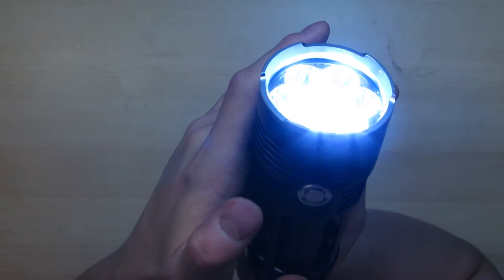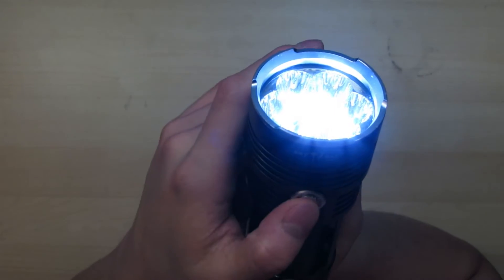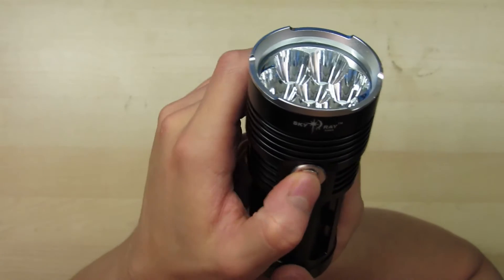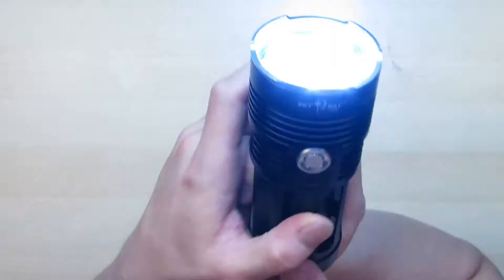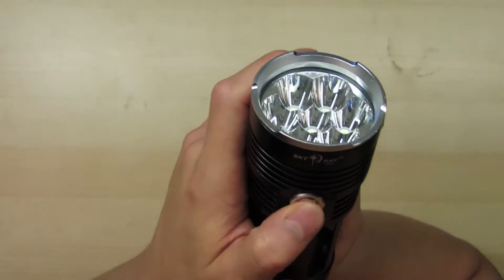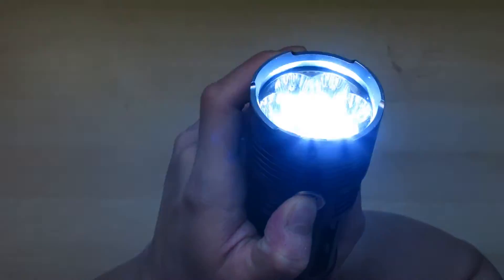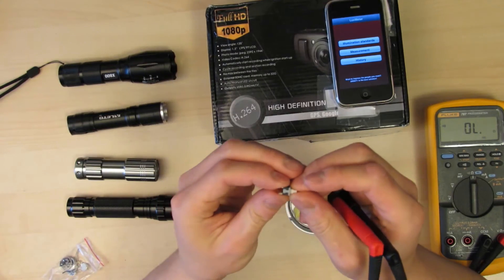If you let go, it goes to high, medium, low and off. At any point in time, if you hold this for three seconds, it'll go into strobe. Even if it's on, hold for three seconds. It doesn't have a memory mode.